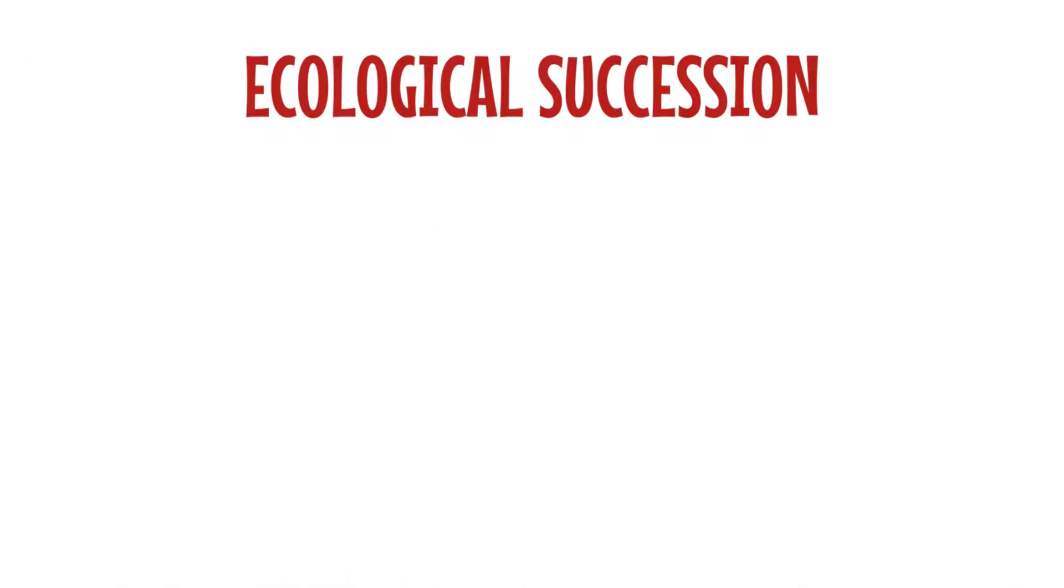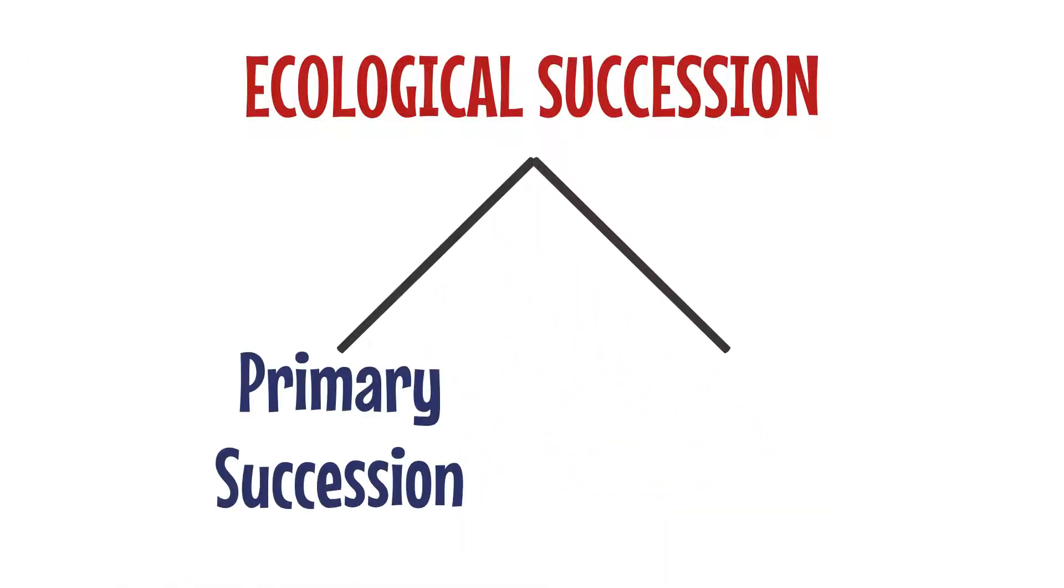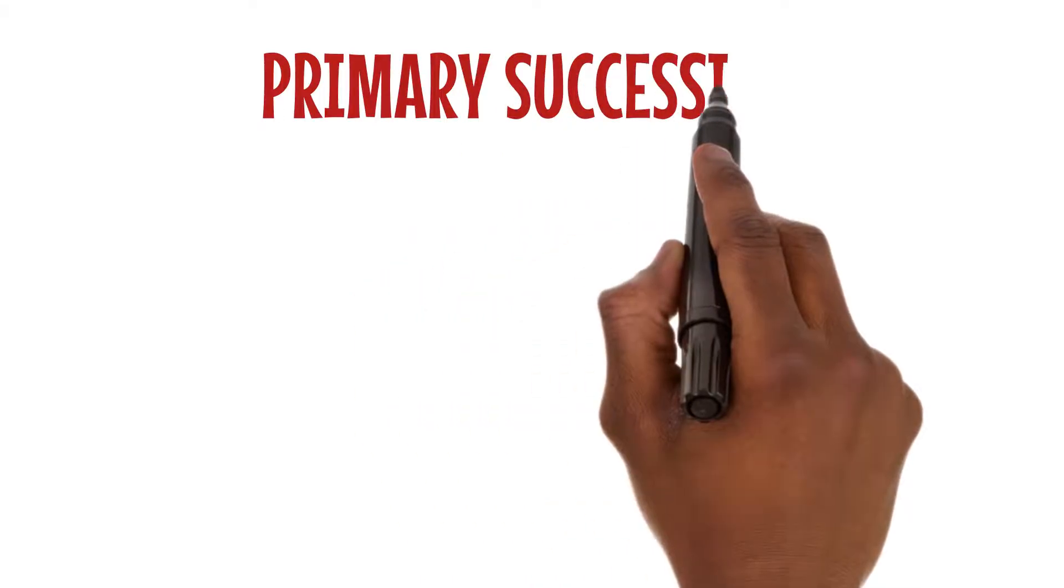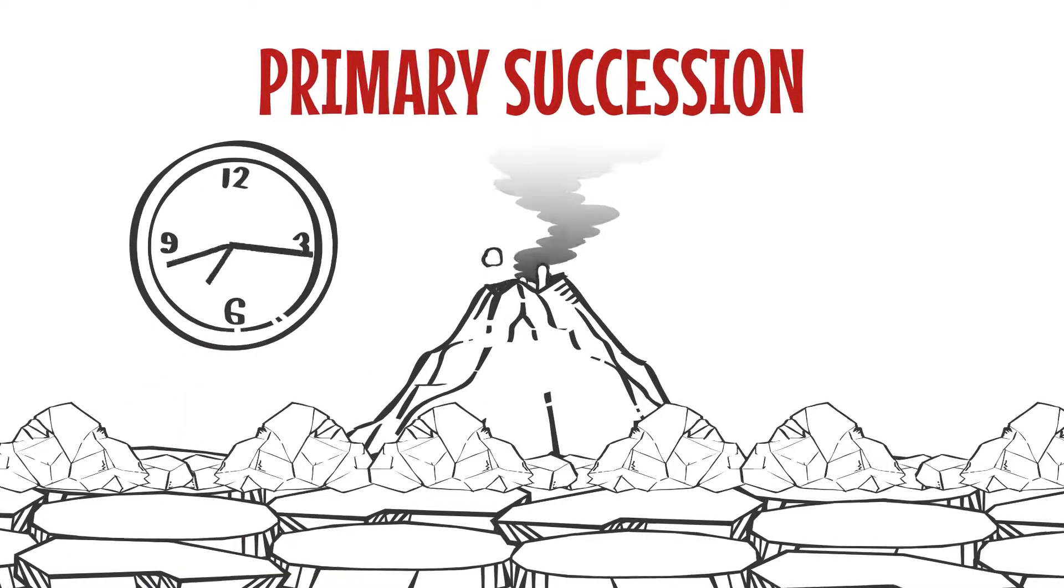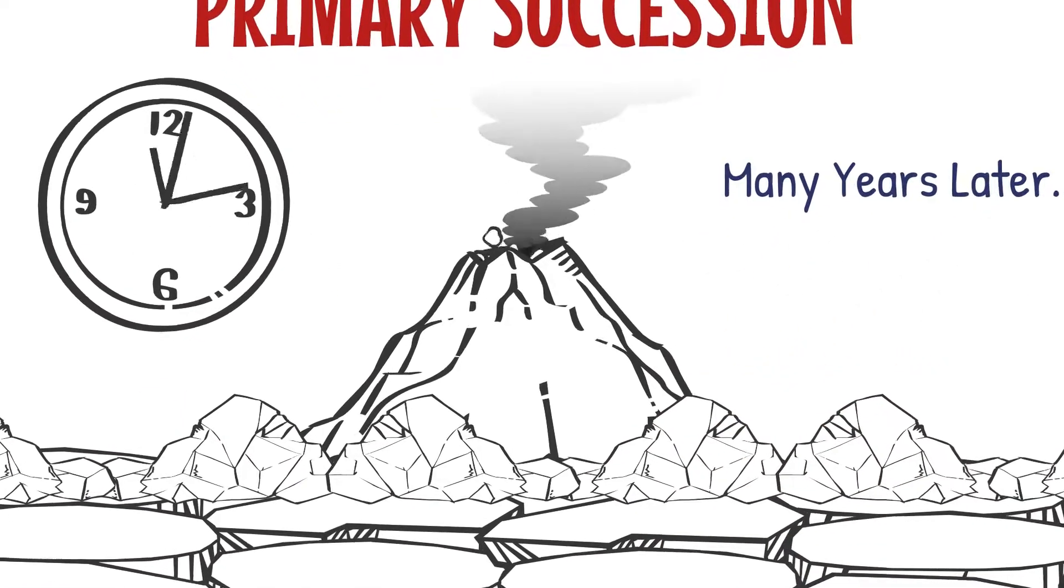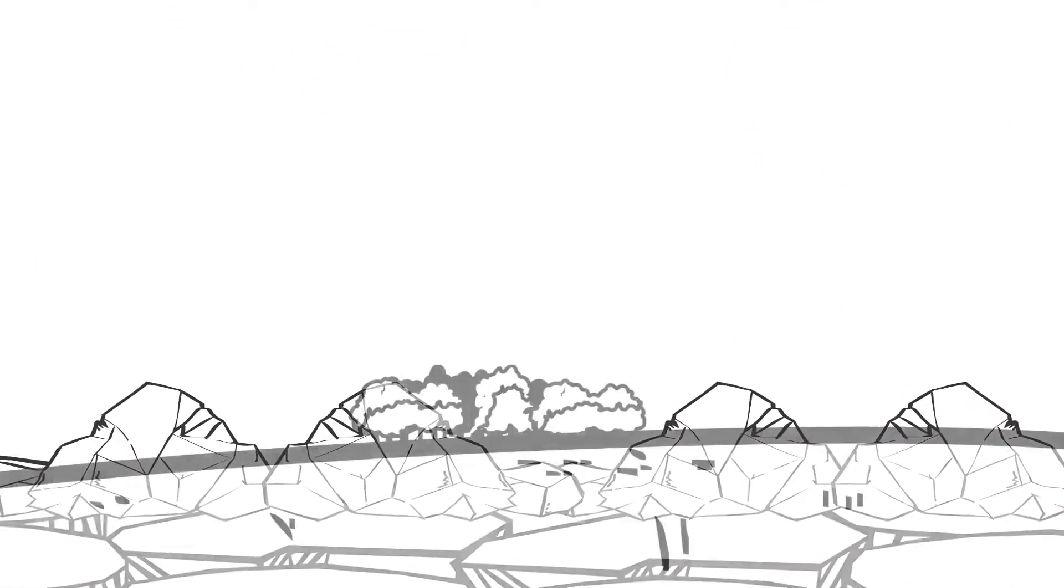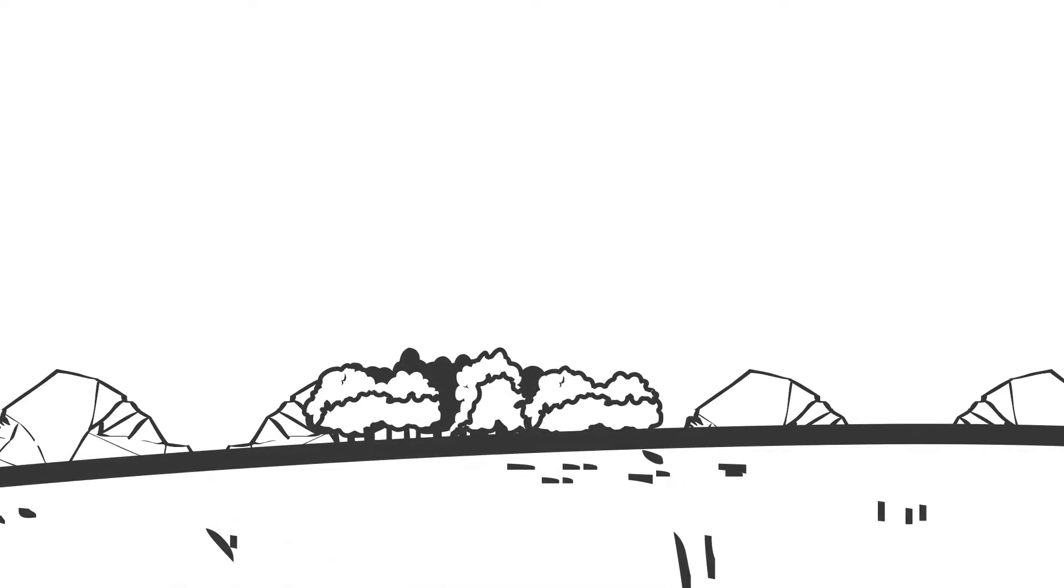There are two types: primary and secondary. Primary succession occurs in places where life has never existed before, such as after a volcanic eruption. It starts with bare rock, and slowly over hundreds or thousands of years, new soil forms and pioneer species like lichens and mosses start to appear.